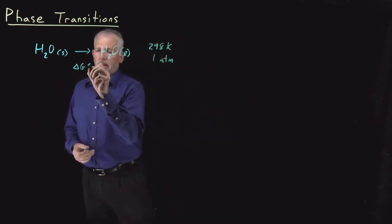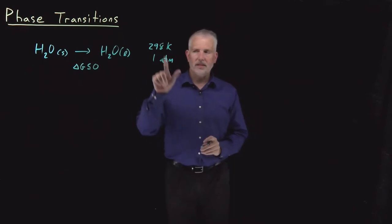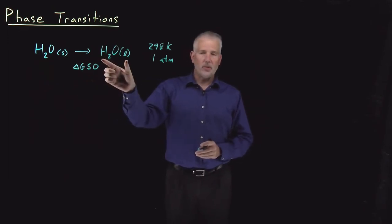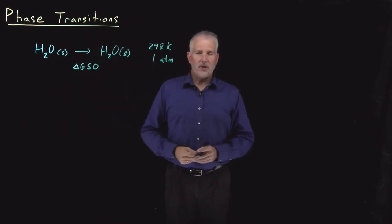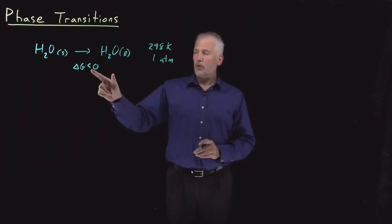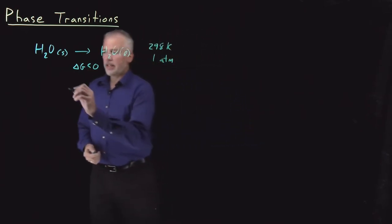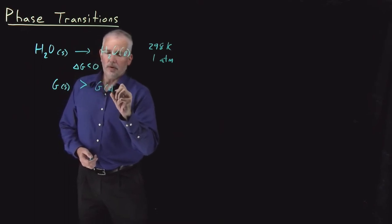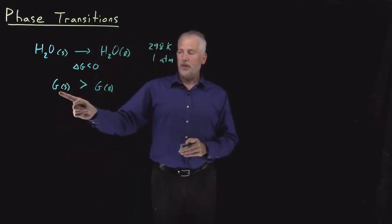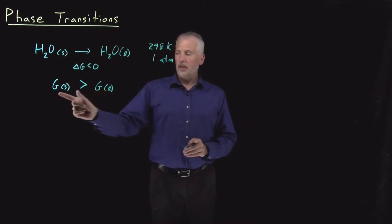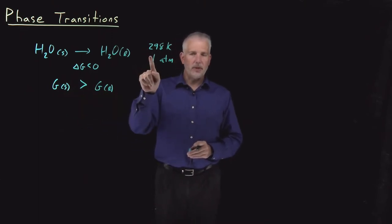We know that a spontaneous process at constant temperature and pressure will have a Gibbs free energy change that's less than zero — strictly negative, not just less than or equal to, because it's spontaneous and not at equilibrium. So when solid ice turns into liquid water at these conditions, that free energy change must be negative. That tells us the Gibbs free energy of the solid is bigger than the Gibbs free energy of the liquid at room temperature and pressure.